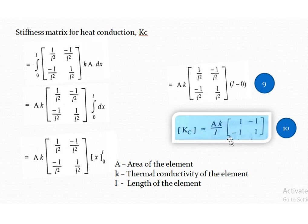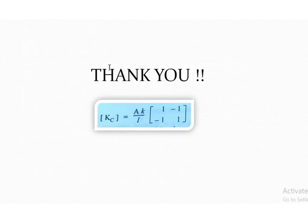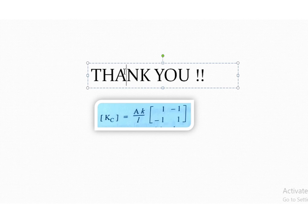This is the stiffness matrix equation for a one-dimensional heat conduction element, where A represents the area of the element, K is the thermal conductivity, and L is the length of the element. When asked about the stiffness matrix for a one-dimensional heat conduction element, write this equation with explanation. Thank you for your support — please subscribe to our channel for more videos.